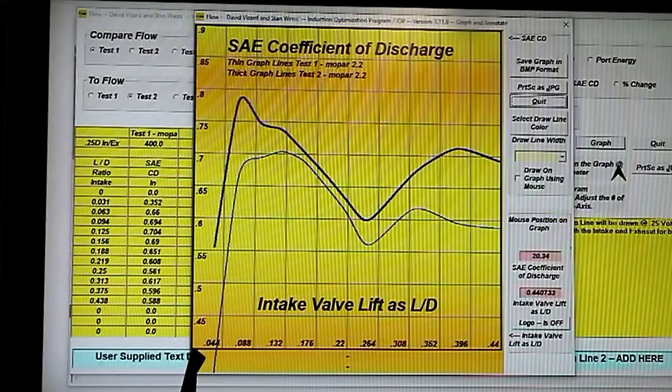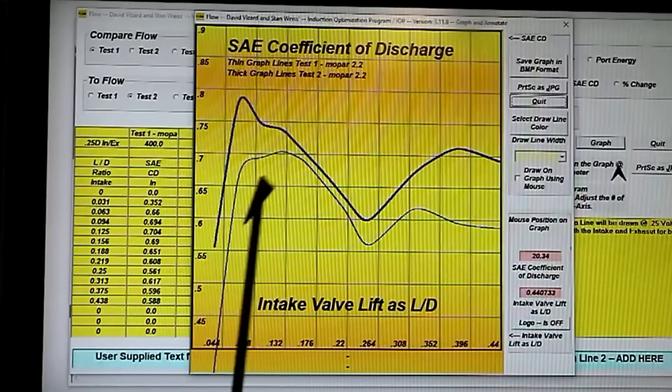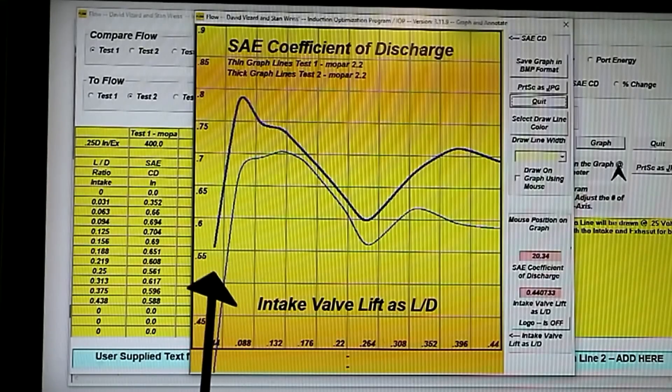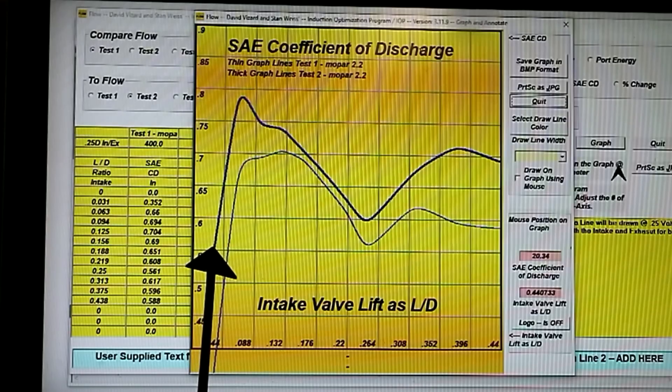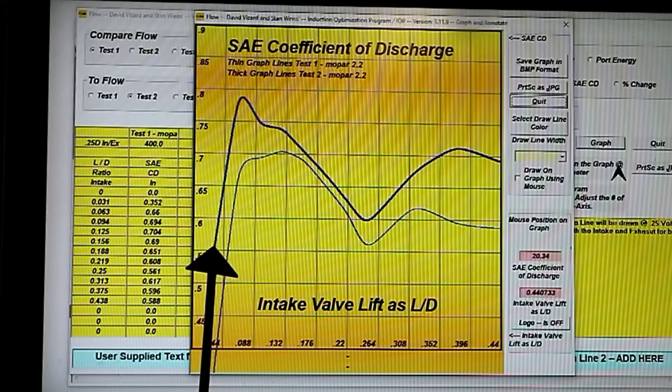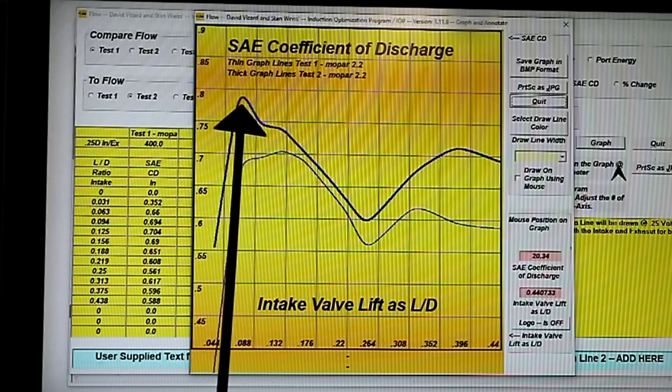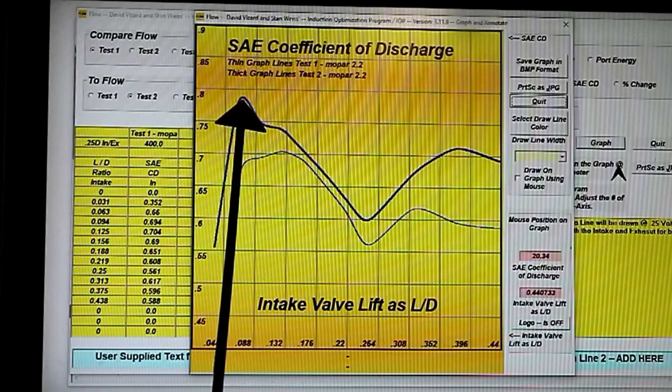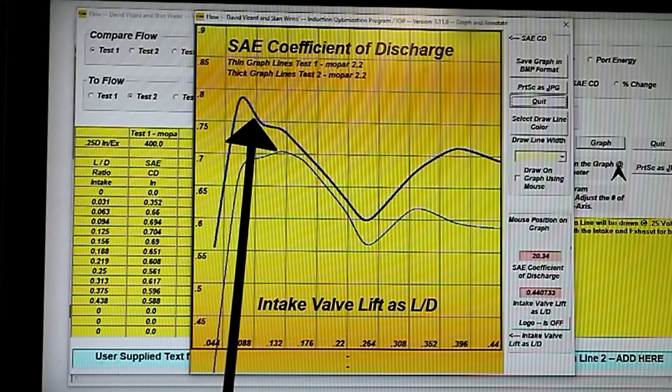Here is our discharge coefficient and I just remember that's a fancy way of saying flow efficiency. As you can see, we made a distinct difference in the flow at low lift. Now, I think I mentioned this before, but it appears that even this one's a low figure. It should be up here somewhere. But it appears we have a little ridge at the top of the seat and I think that's causing it in both cases. But we'll see how that fares when we do the chamber.